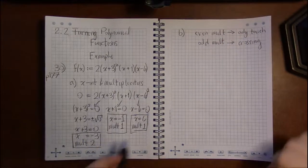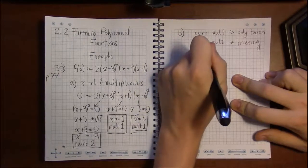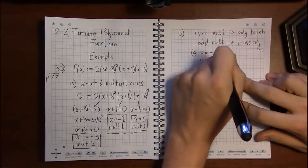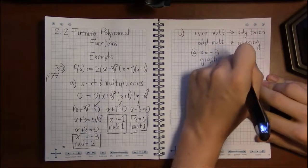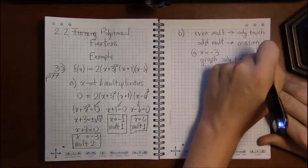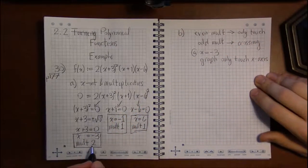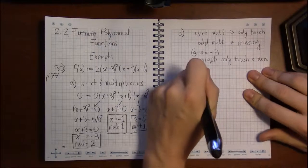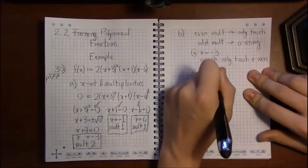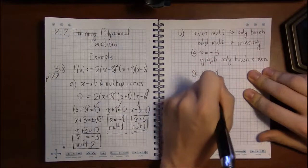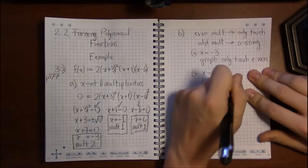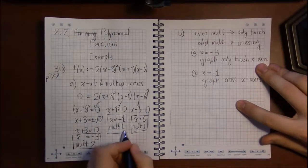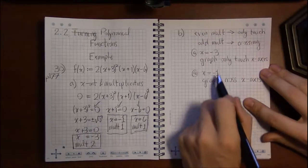So, at x equals minus 3, the graph will only touch the x-axis because its multiplicity 2 is even. So even multiplicity it just touches. At x equals minus 1, the graph will cross the x-axis because the multiplicity of minus 1 is 1 and that's odd. So an odd multiplicity crosses.